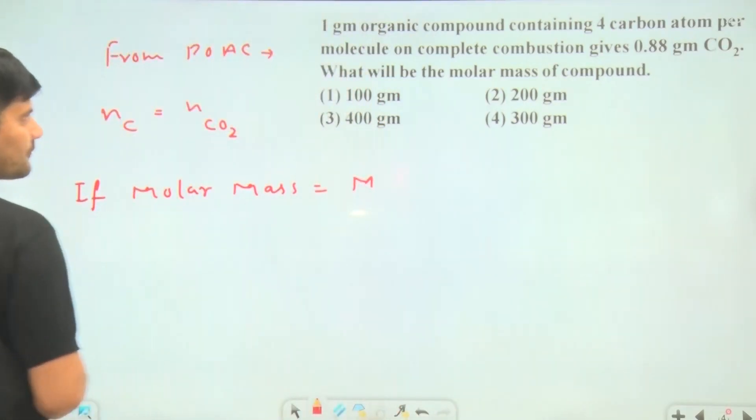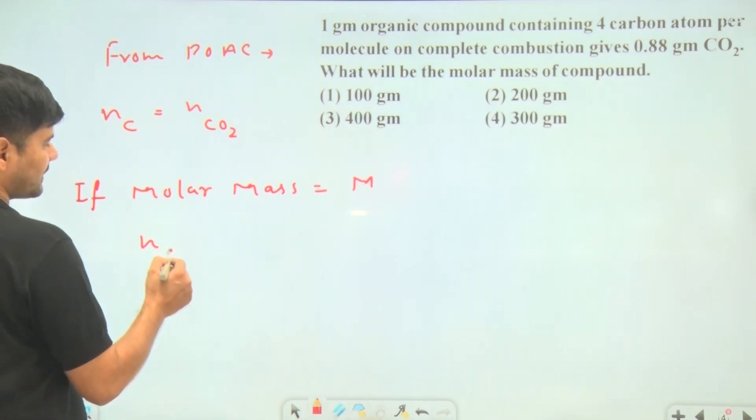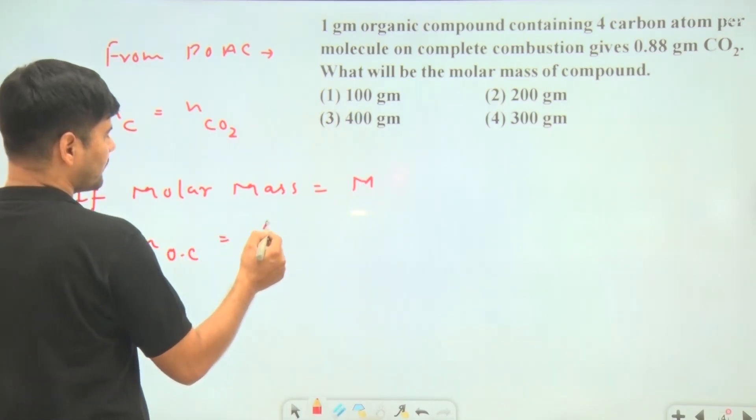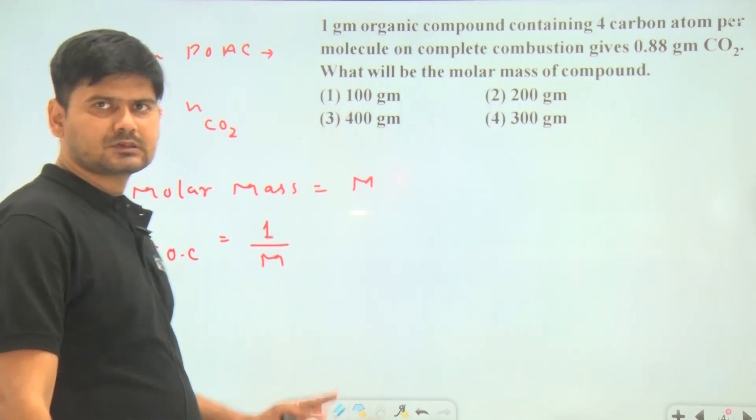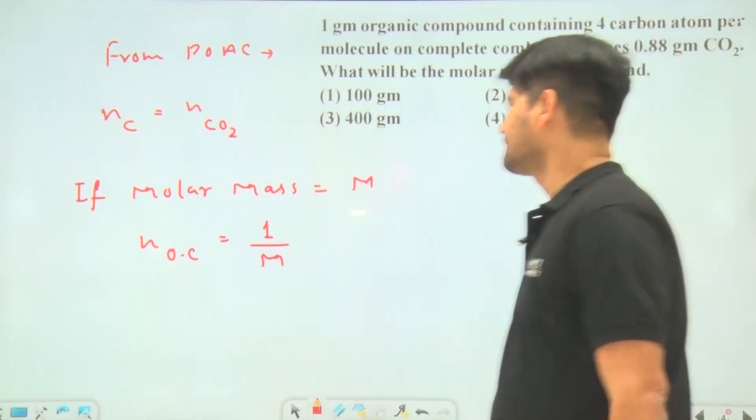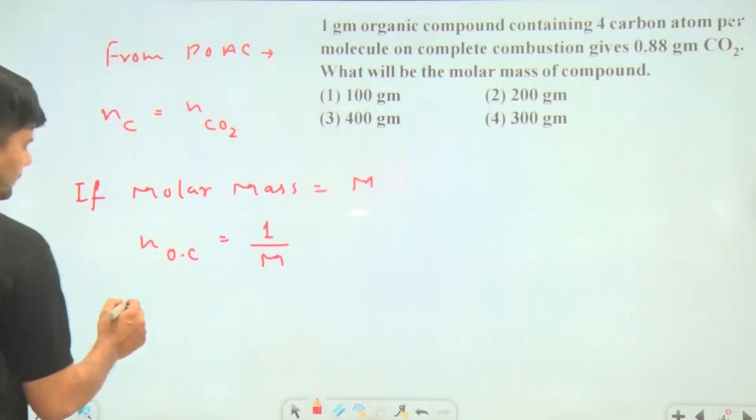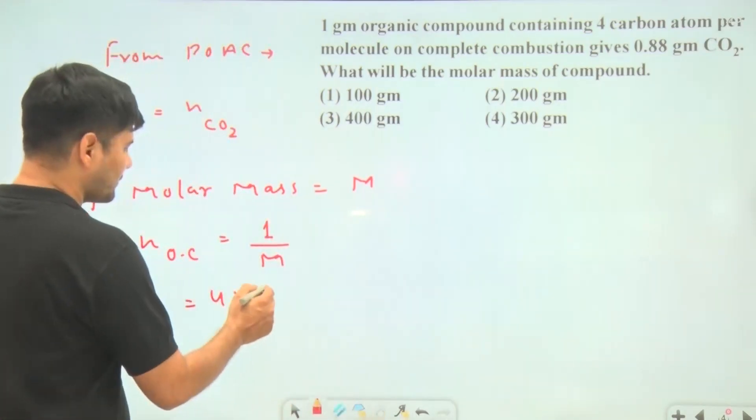Moles of organic compound equals weight divided by molar mass, which is 1/M. Since each molecule contains 4 carbon atoms, moles of carbon atoms equals 4 times moles of organic compound, which is 4/M.